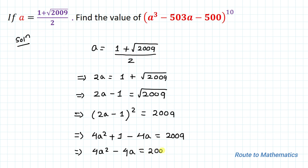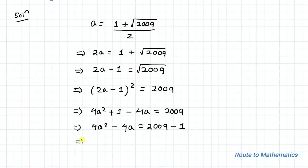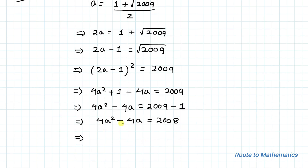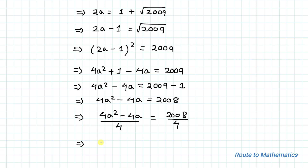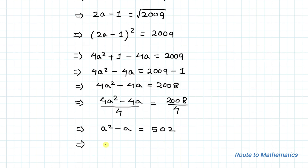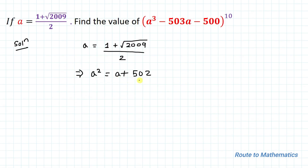Taking 1 to the right-hand side gives 4a² - 4a = 2008. Dividing both sides by 4, we get a² - a = 502. Therefore, a² = a + 502.